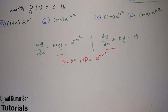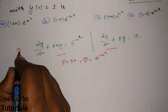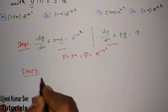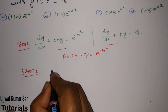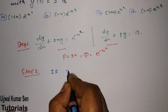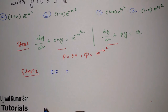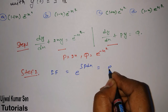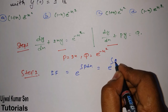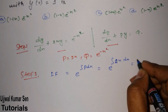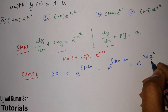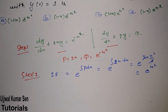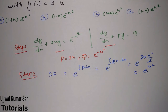Step one is the comparison step. Step two: find the integrating factor. The formula is e to the power of integral P dx. So e to the power of integral 2x dx. After integration: 2 times x squared by 2 — the 2's cancel — giving e to the power x squared as the integrating factor.